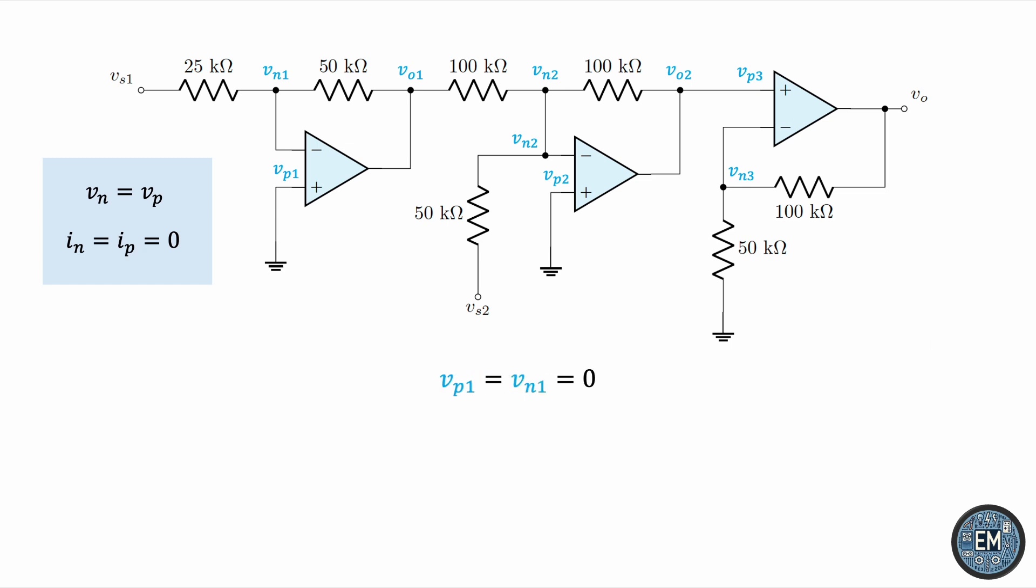And now we'll write a KCL equation at the node labeled VN1. We have this current entering the node and this current leaving the node. By the second constraint, we know that no current goes to the inverting input of op-amp 1, so those are the only two currents we should worry about. The node voltage equation gives us Vs1 minus VN1 over 25 kΩ equals VN1 minus V01 over 50 kΩ. Both resistors are in kΩ, so the units will correct themselves. There's no need to write 25,000 and 50,000 in the denominator. We know that VN1 is 0, so we can simplify this equation and then multiply both sides by 50, giving us V01 equals negative 2Vs1.